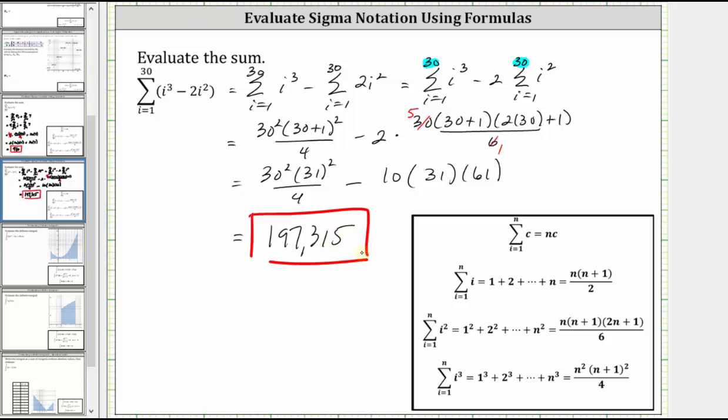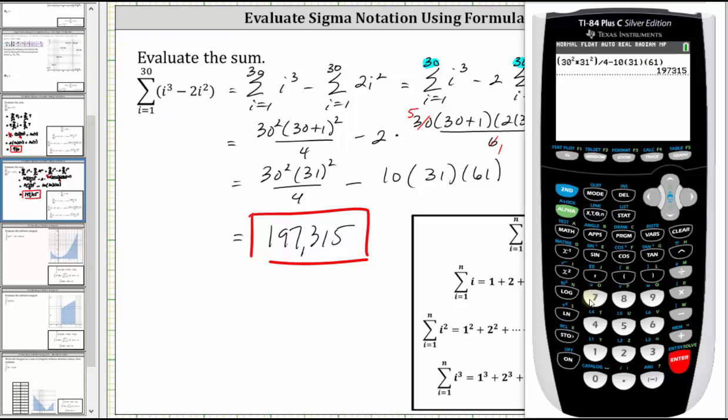Let's verify this on the TI-84 using the summation function. To do this, press math, arrow down to option zero for summation, which is here, press enter. We can use any variable. I'm going to use x. The lower limit is one, right arrow, upper limit is 30, right arrow.